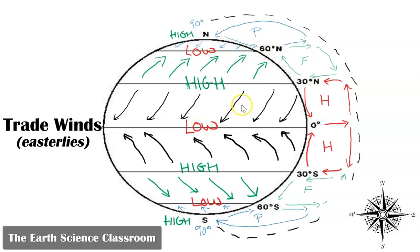Now these are easterlies. They come from the east and go to the west, both on the northern hemisphere and southern hemisphere. So these are called the trade winds, but they are easterlies.